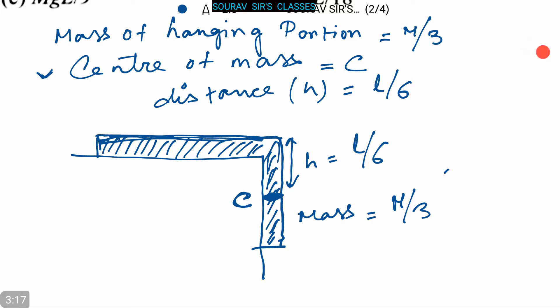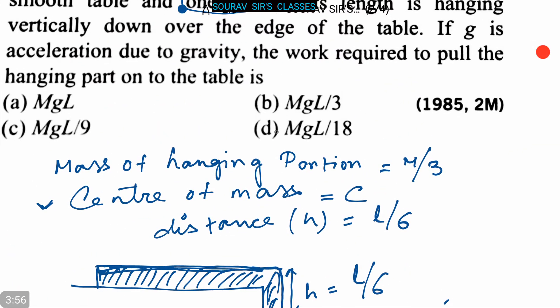Now, W equals MgH. Putting the value of M and H, we can rewrite this as (M/3) × g × (L/6). So option D, that is MgL/18, is the correct answer. The work required to pull the hanging part onto the table is MgL/18.